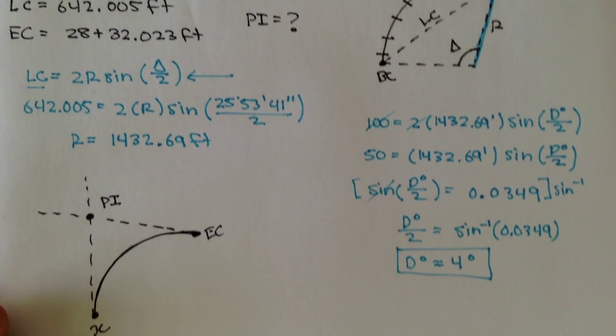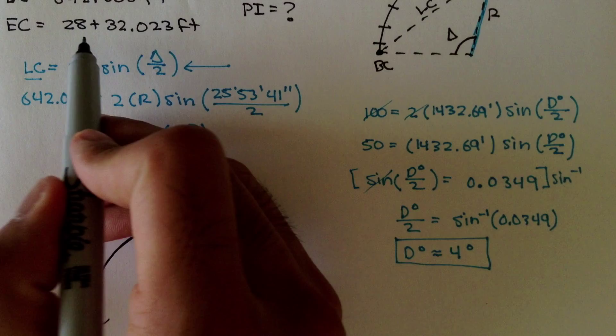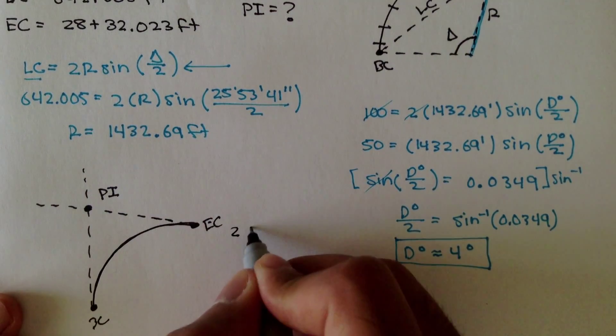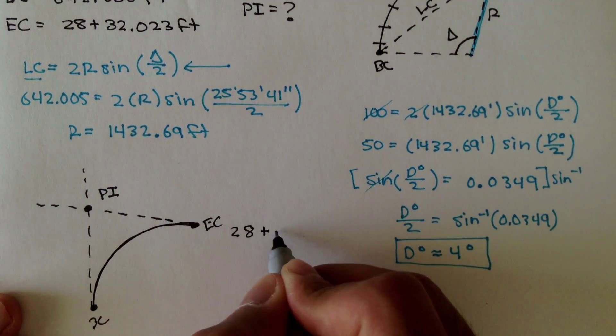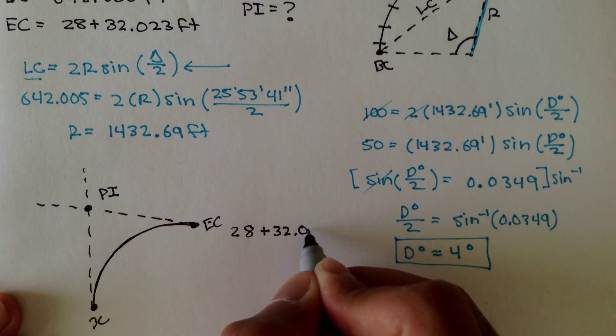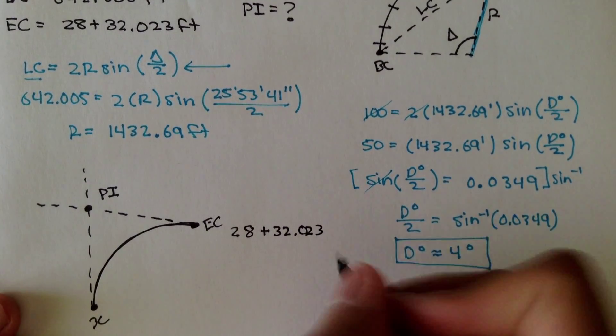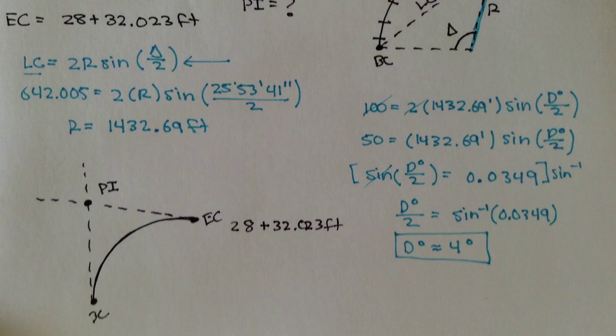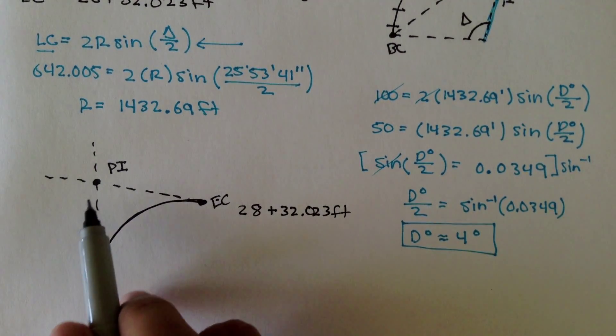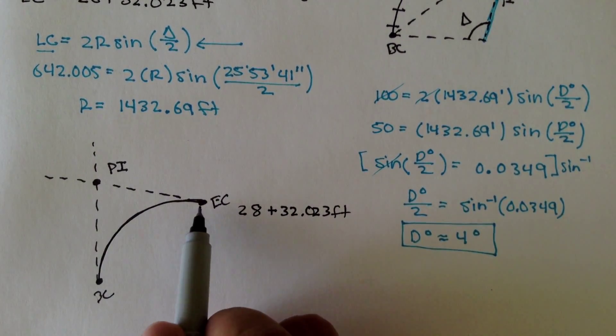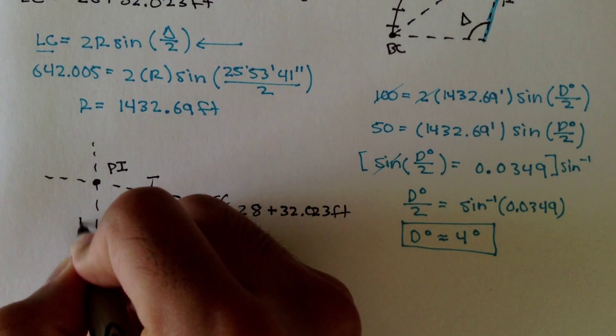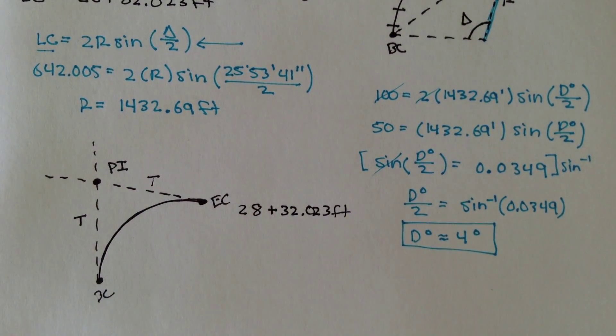And in our parameters, we're actually given EC is located at 28 plus 32.023 feet. And remember, when we find the point of intersection, these two distances are equal, they're called T.